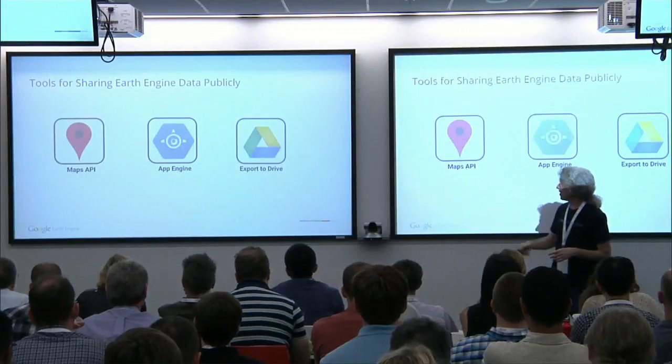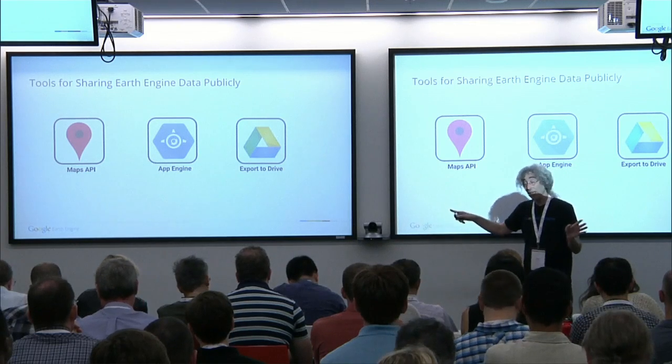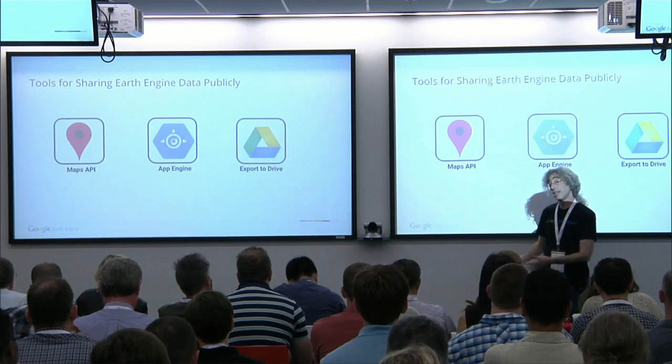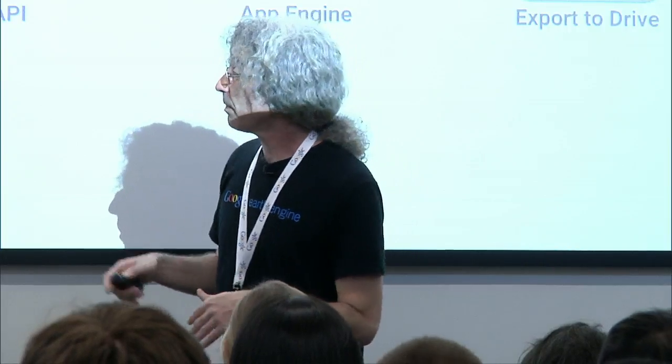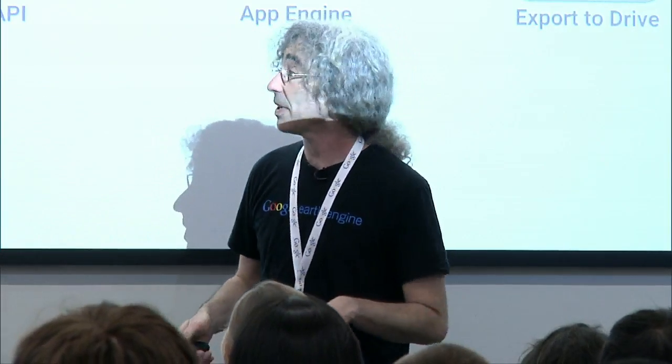The last one I wanted to mention is export to Drive. Google Drive is a place to store data. The team has been making it so that you can batch export to Drive — you can do a long-running analysis that exports imagery to Drive, publish it, send out the GeoTIFF, download tabular data, and download videos. You can export them to Drive and then download them from Drive. That's another place where you can make data publicly available, because you can just get the image and mail it to your friends.